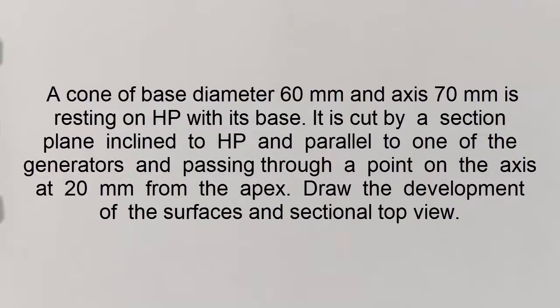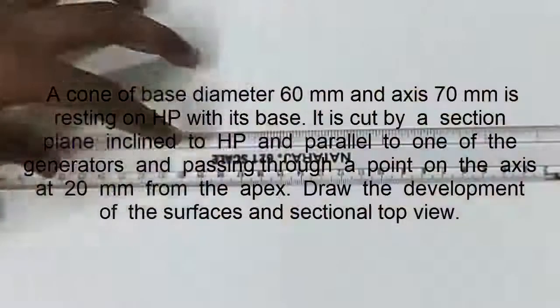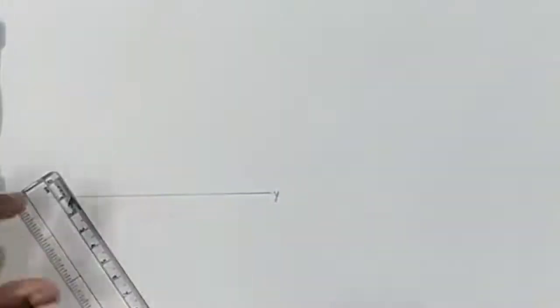This problem is also a cone of base diameter 60mm and axis 70mm. Let us draw the cone first. I am drawing the XY line, then I am drawing the cone of base diameter 60mm, that means the radius is 30mm.